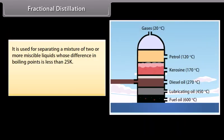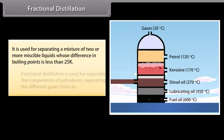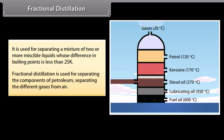Fractional distillation. It is used for separating a mixture of two or more miscible liquids whose difference in boiling points is less than 25K. Fractional distillation is used for separating the components of petroleum, separating different gases from air, etc.